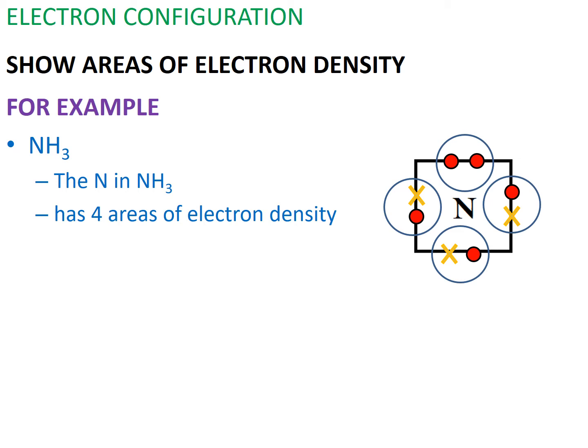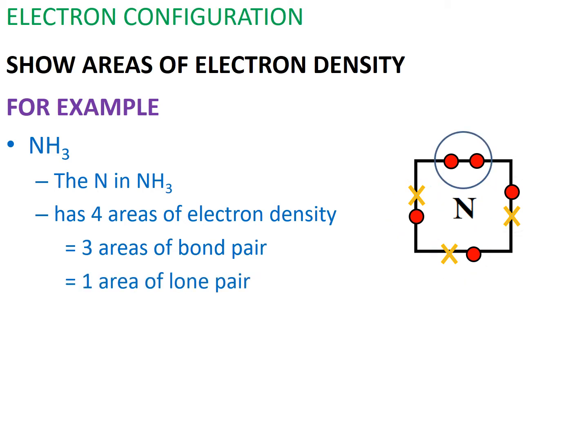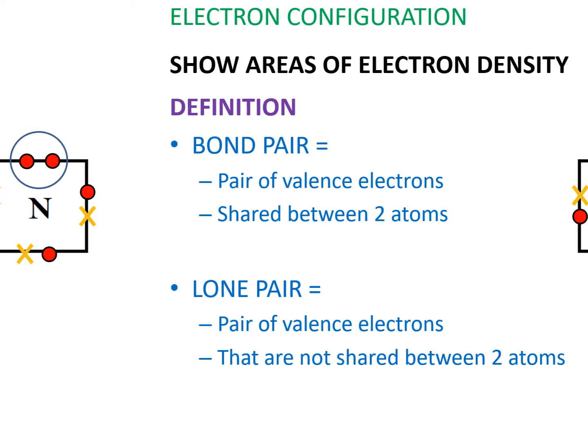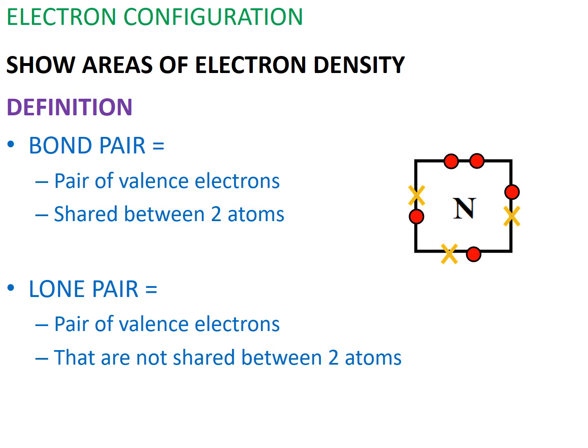The nitrogen in ammonia has four areas of electron density. Three of these areas are occupied by bond pair electrons, leaving the remaining one area occupied by a lone pair of electrons. A bond pair is a pair of valence electrons that is being shared between two atoms, while a lone pair is a pair of valence electrons that is not being shared between two atoms.